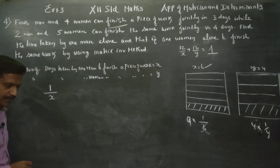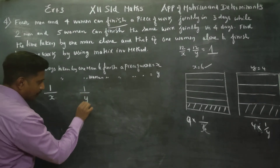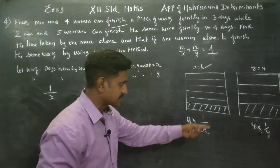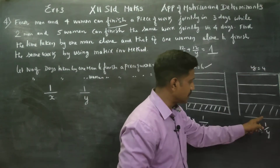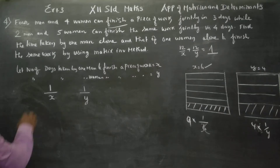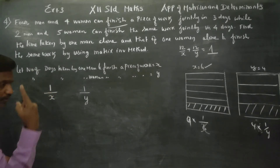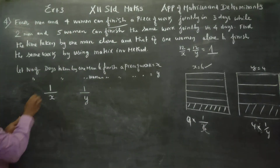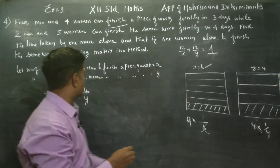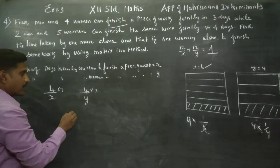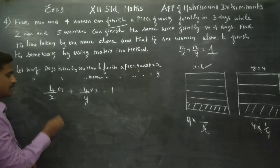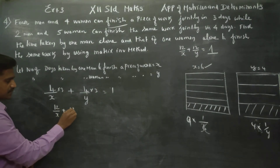One man's capacity is 1 by x. One woman's capacity is 1 by y. If the number of days is 6, then the daily fraction is 1 by 6; if 4 days, then 1 by 4. The first major equation formed is: 12 by x plus 12 by y is equal to 1.